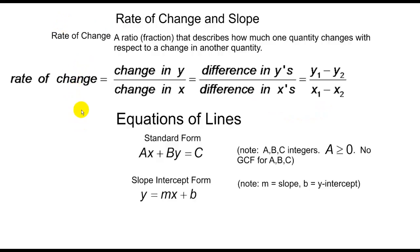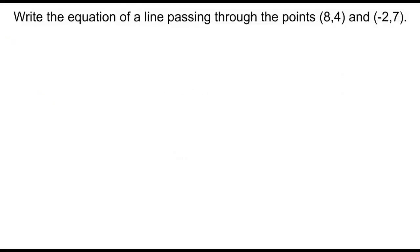And then usually with slope we write equations of lines. There's a standard form where we have Ax plus By is equal to C, and you have to note that A, B, and C are all integers. A has got to be greater than zero, never a negative, and there can't be a GCF between A, B, or C. And then finally the one we're most used to is the slope intercept y equals mx plus b where m is the slope and b is the y intercept.